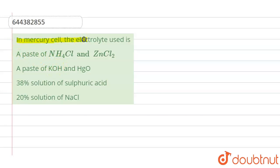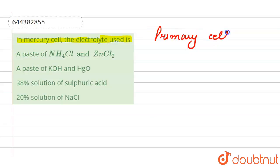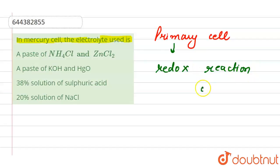The question is: in a mercury cell, what electrolyte is used? The mercury cell is a type of primary cell. Primary cells are those cells in which the redox reaction occurs only once. After that, the cell becomes dead.